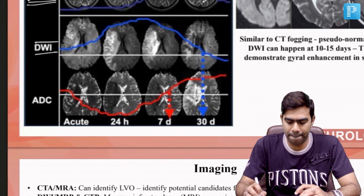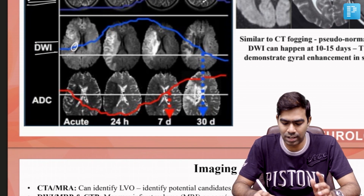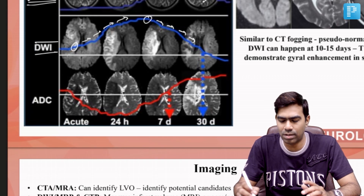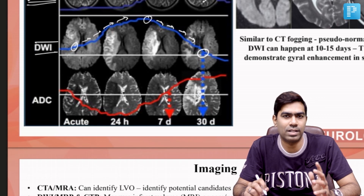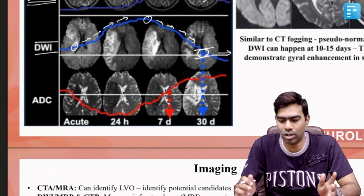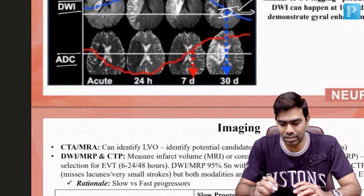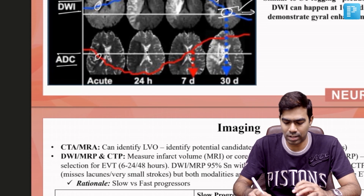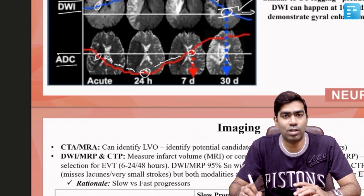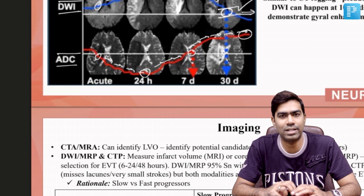DWI abnormality starts within minutes of ischemic stroke onset, showing bright signals that peak by around 5 to 7 days. The signal then drops by 2 to 4 weeks — especially at 30 days — with pseudo-normalization possible, after which DWI is unreliable for chronic strokes. ADC changes also start within minutes, with the low signal peaking by approximately 24 hours, pseudo-normalizing around 7 to 8 days, then steadily increasing to show bright signals in chronic strokes.